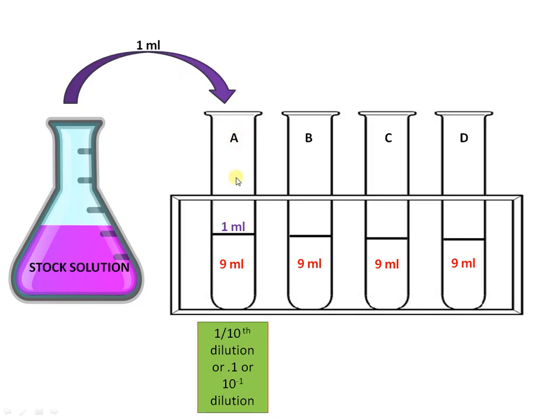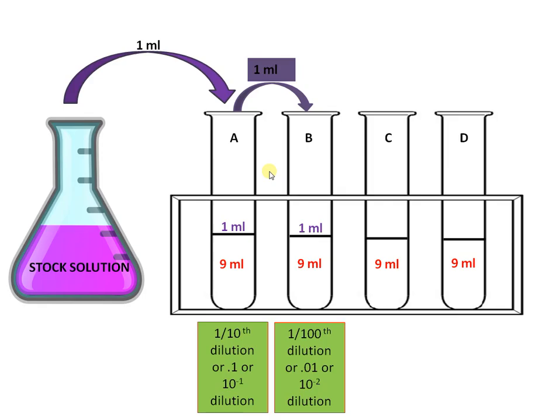Mix well and transfer 1 ml from test tube A to test tube B. We are further diluting by 10 times, making the concentration in test tube B 1 by 100 dilution, that is 10 raised to minus 2 dilution.